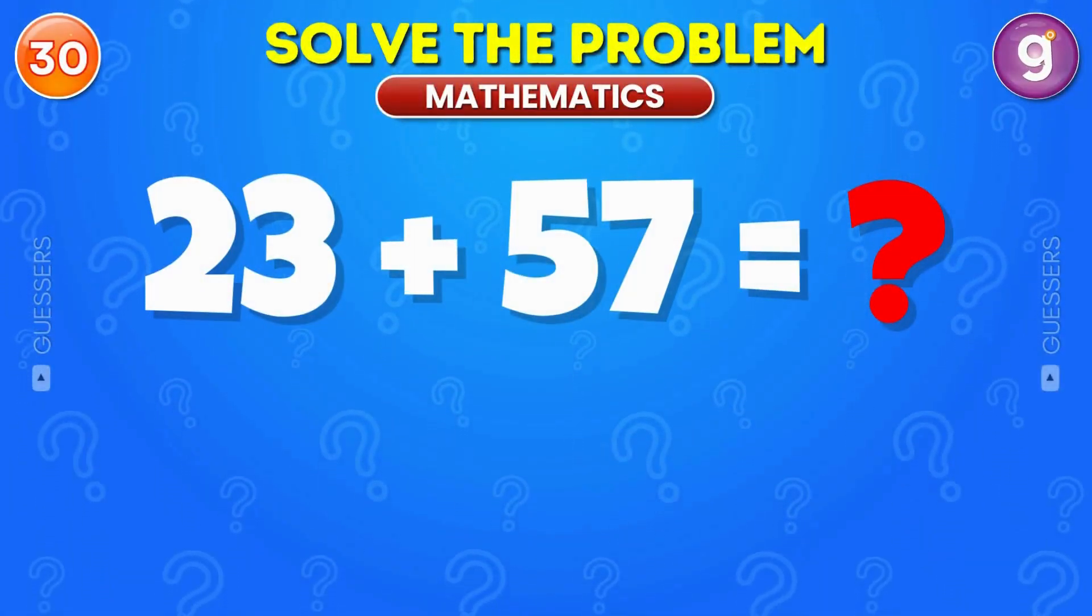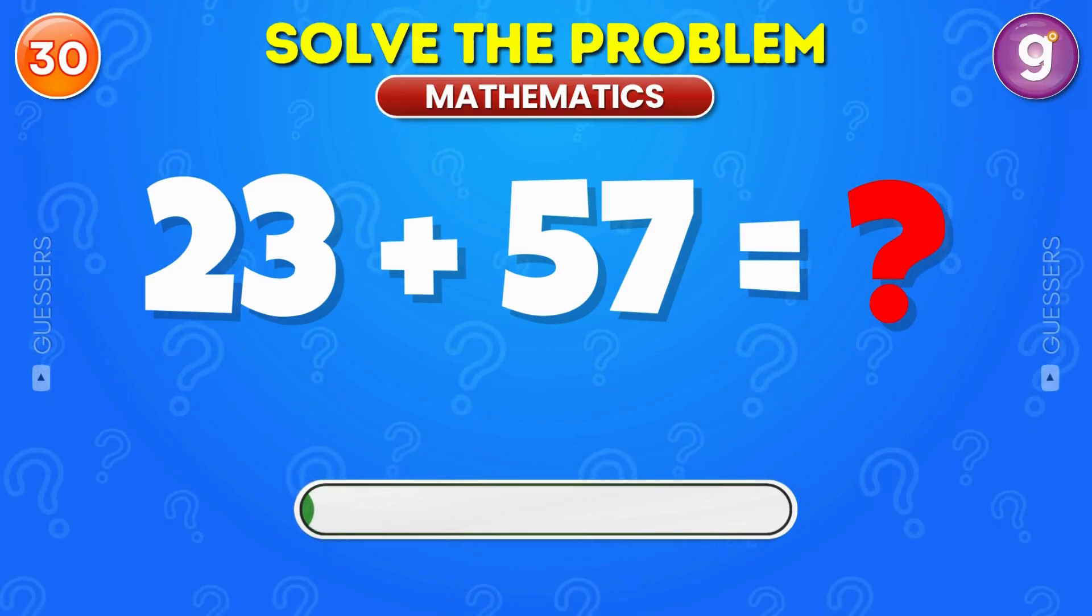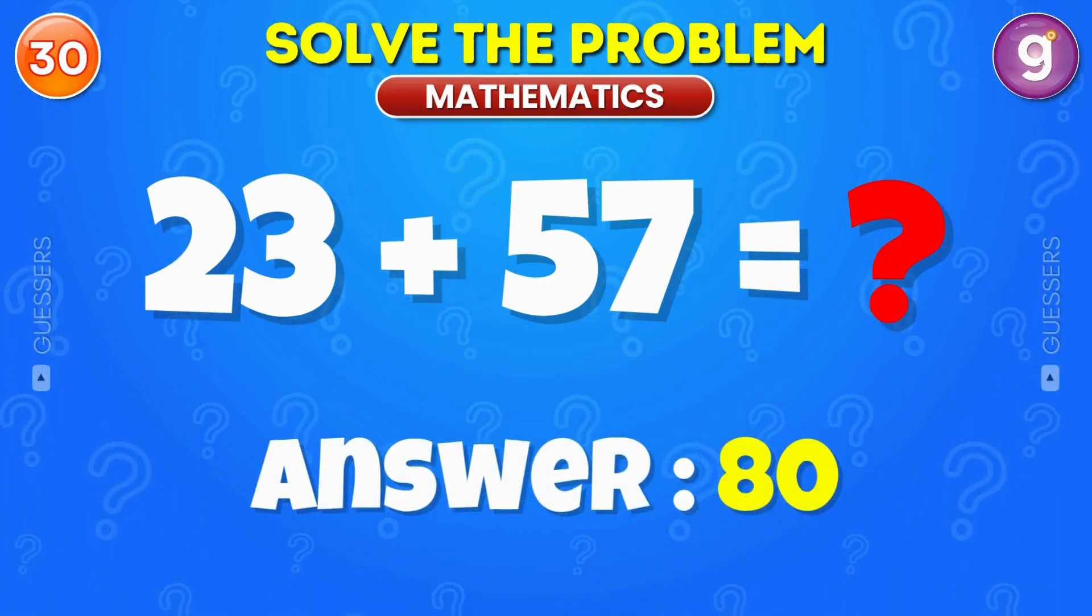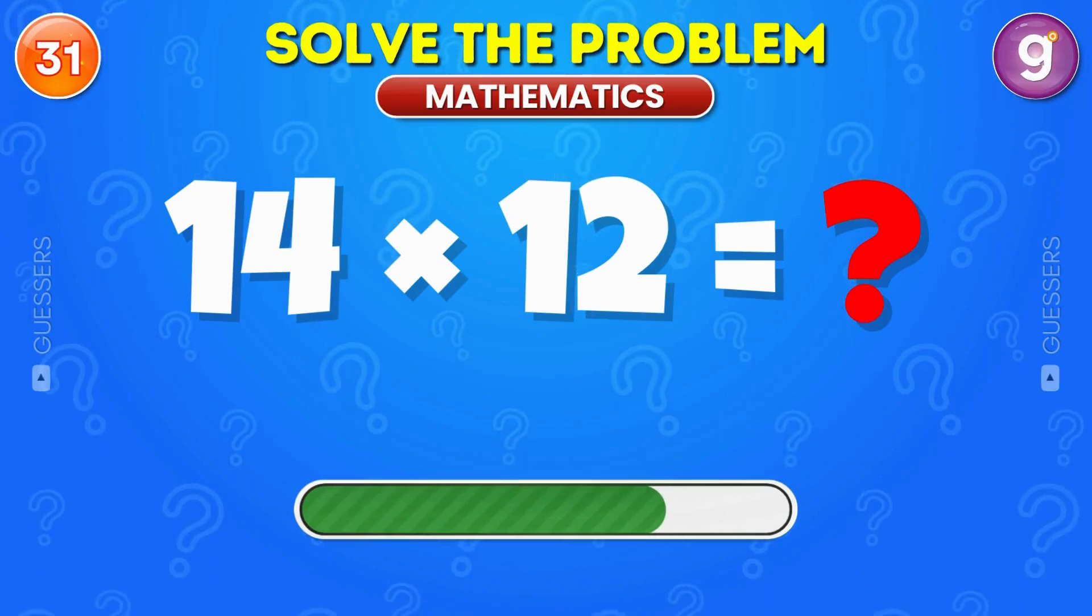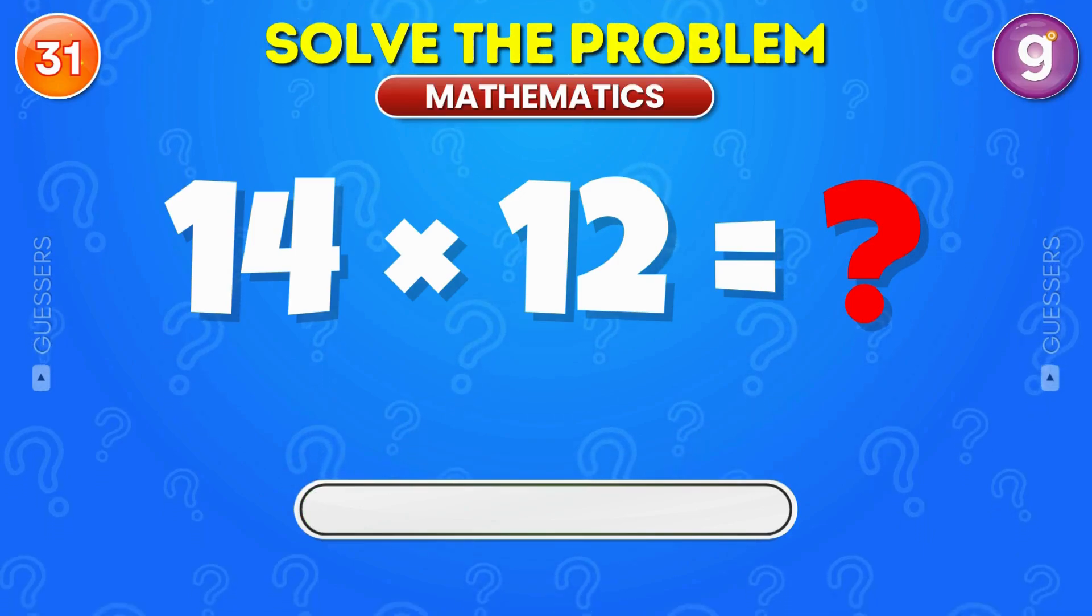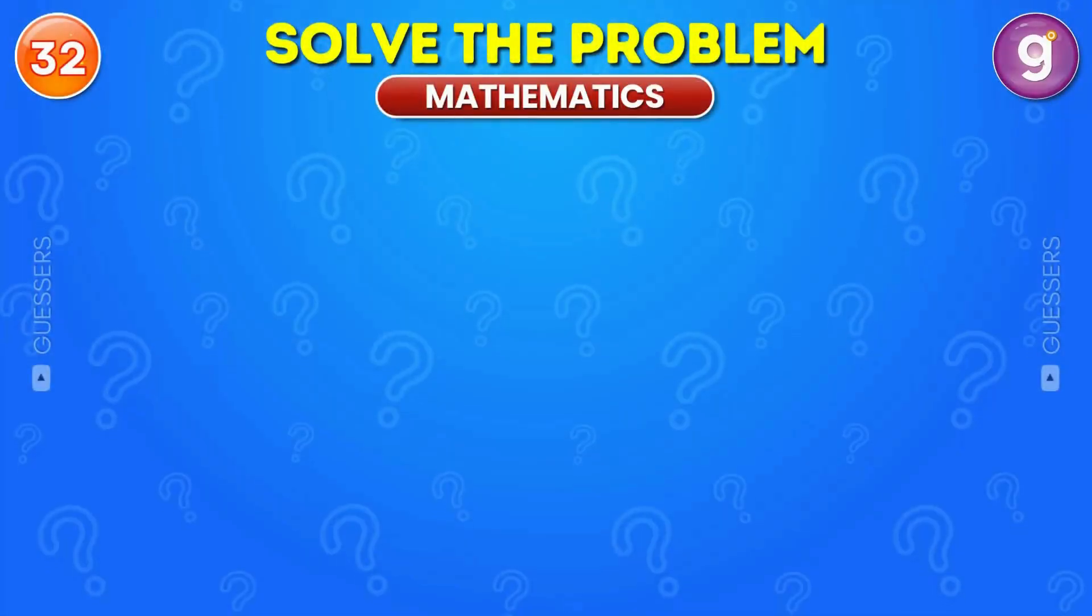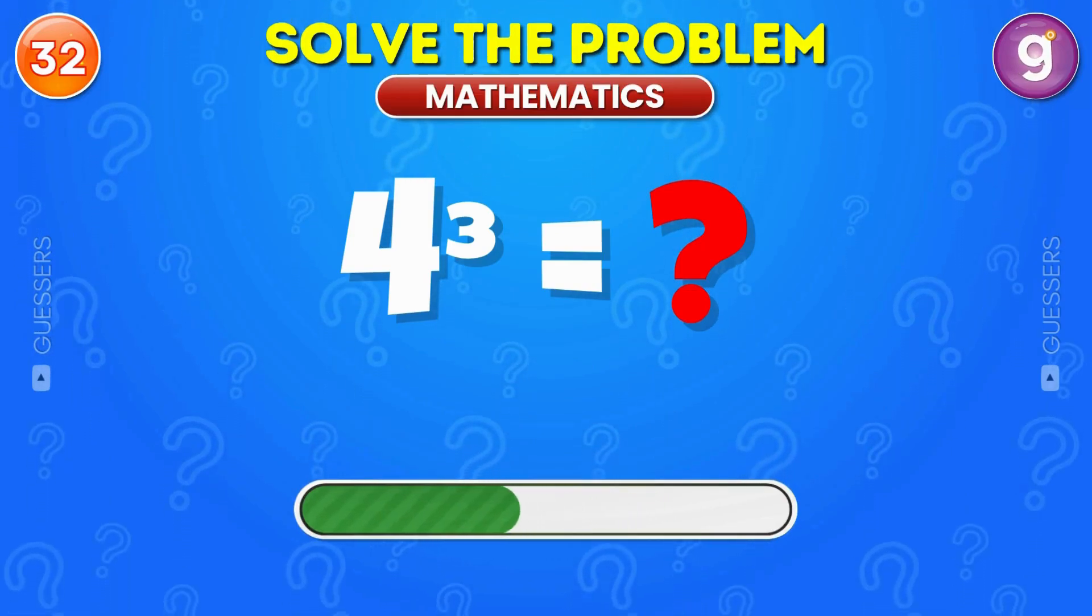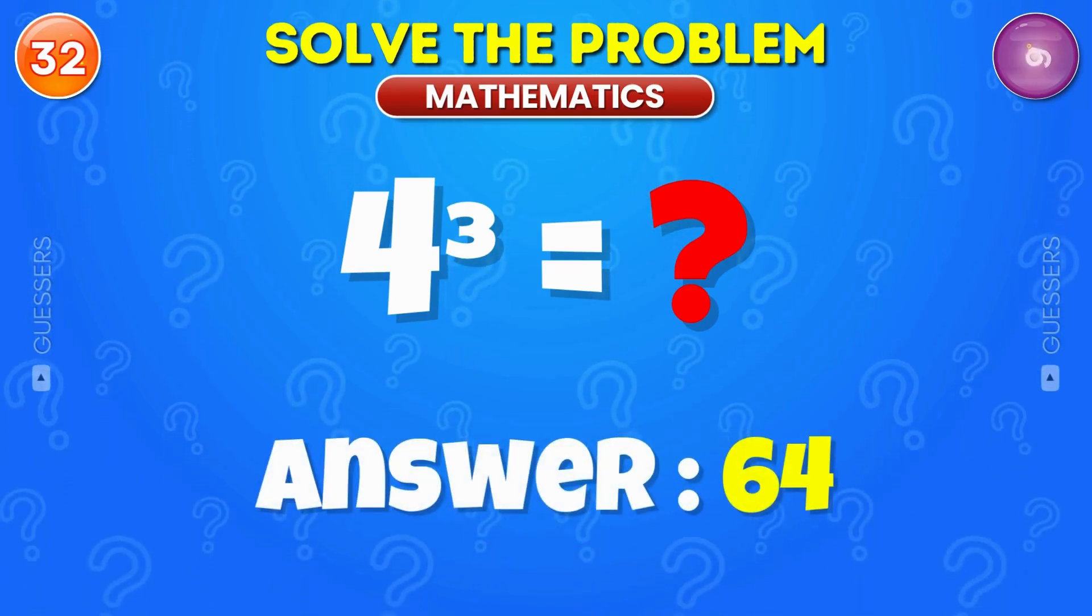What is 23 plus 57? It's 80. Multiply 14 by 12. The answer is 168. What is the cube of 4? It's 64.